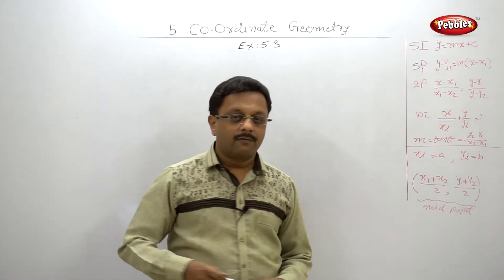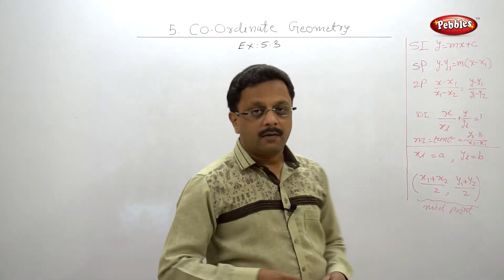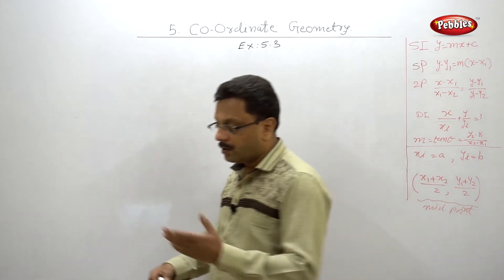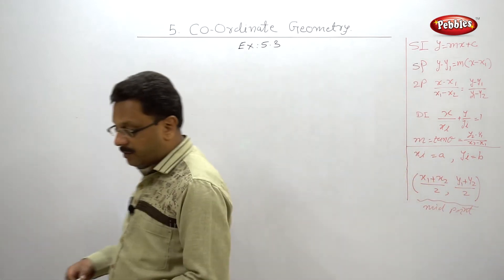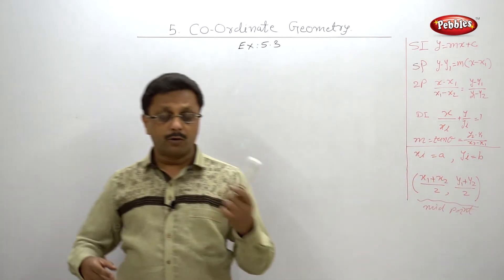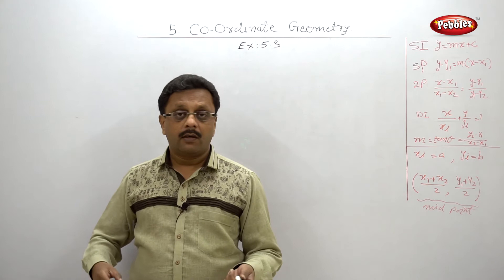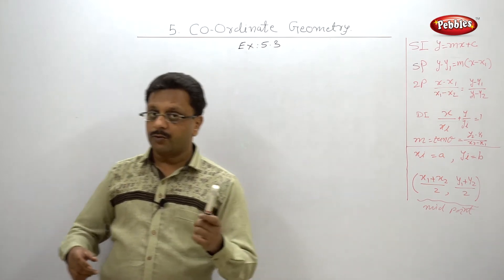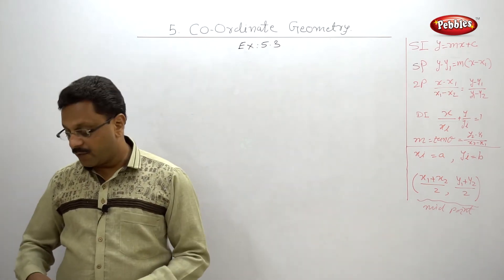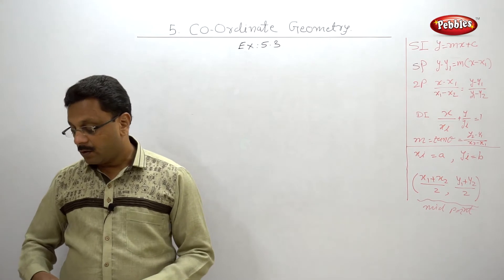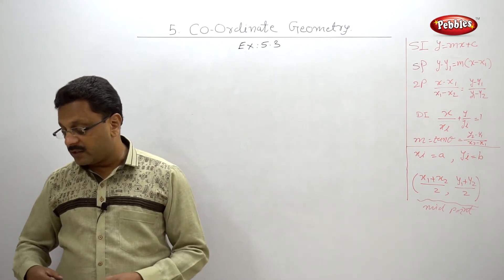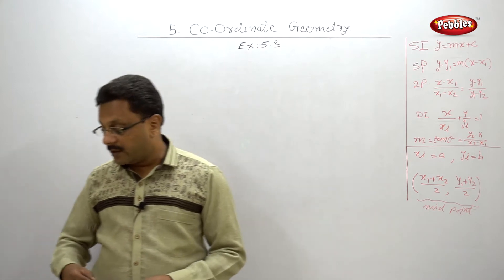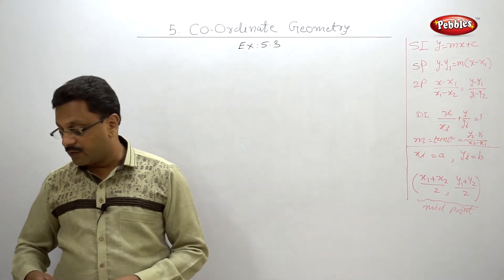Hello friends, welcome back. Let us solve Exercise 5.3. First example — I hope you have your notebooks and your textbook with you. Just read with me. First example: the slope of a line is 3 and y-intercept is minus 4. Write the equation of the line.